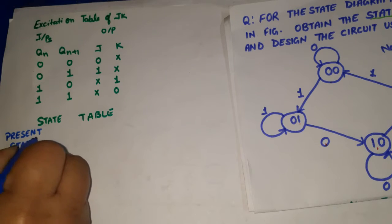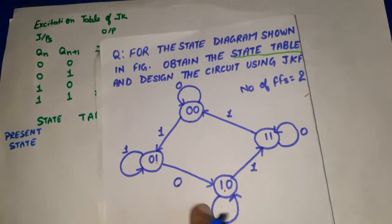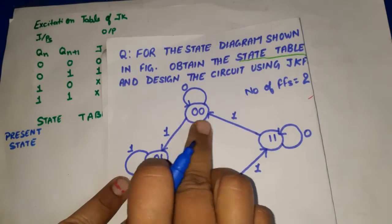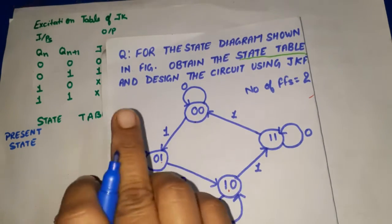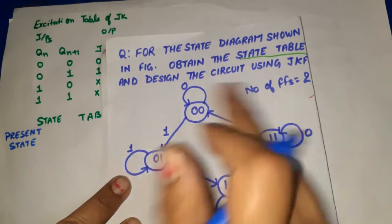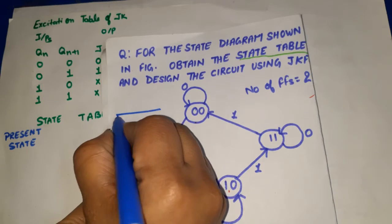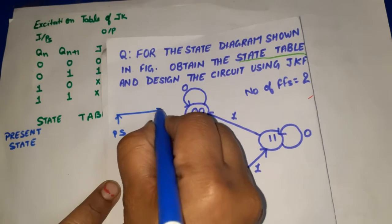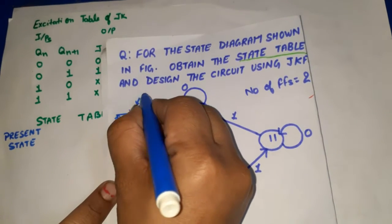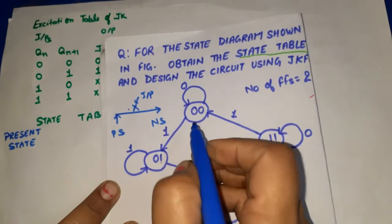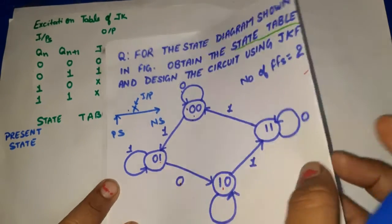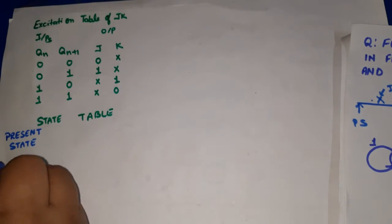The values in the circles in the state diagram are the states of the flip-flops. This column is called the present state. Every state has two bits, and one bit corresponds to one flip-flop, so two bits means we need two flip-flops.